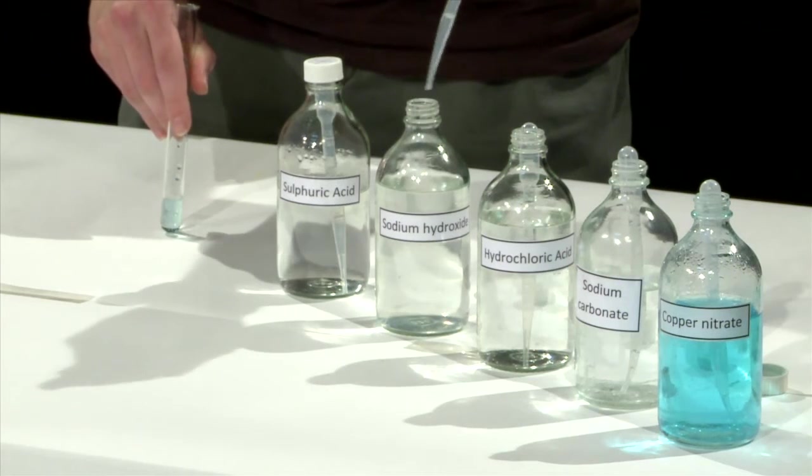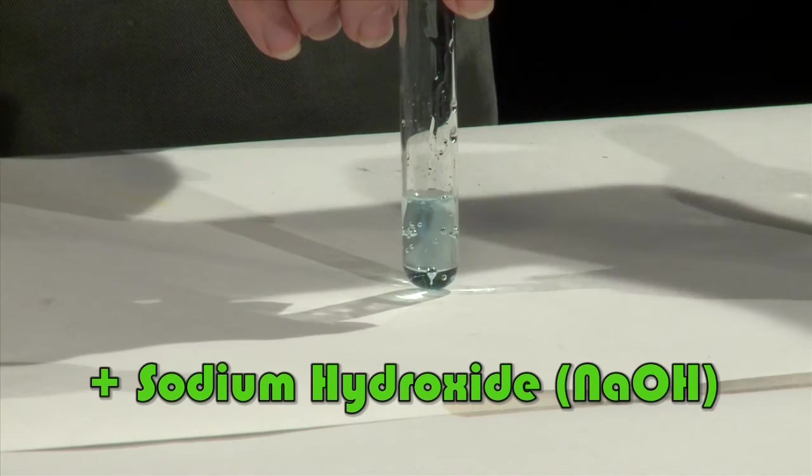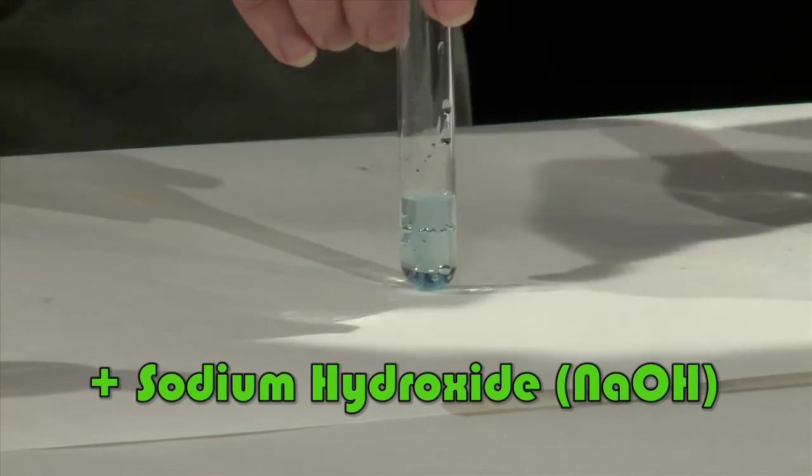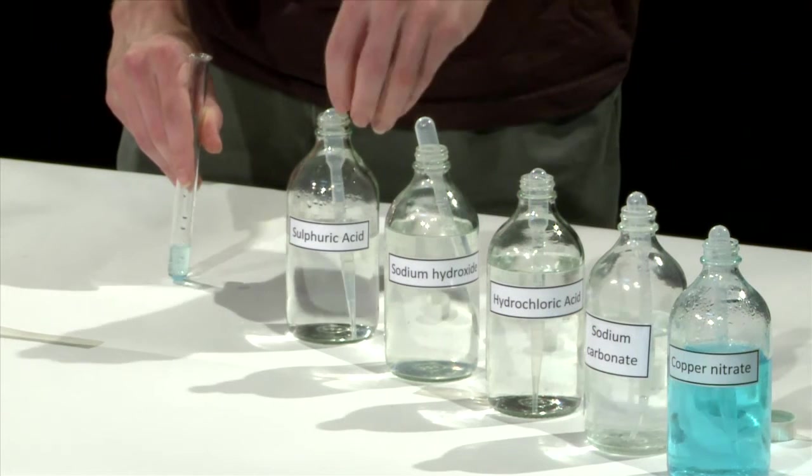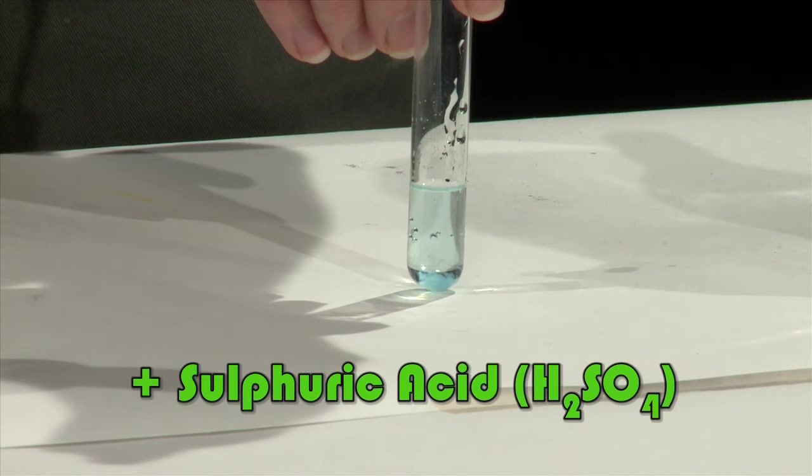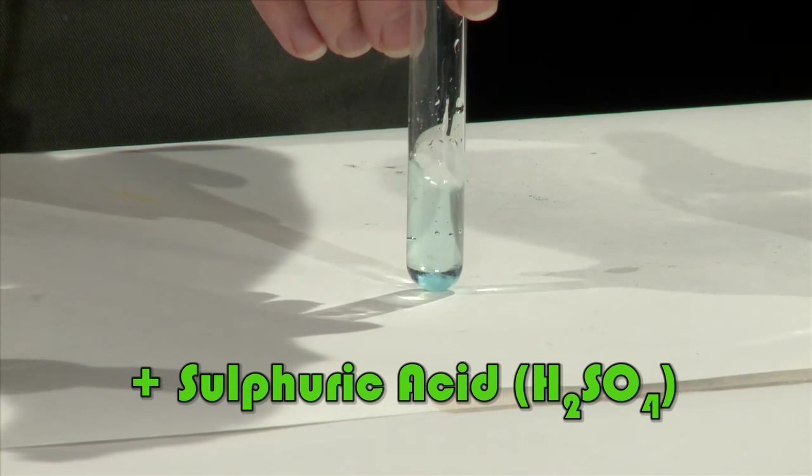Next add 3 drops of sodium hydroxide. This will produce a blue precipitate of copper hydroxide. Then add 15 drops of sulfuric acid. Sulfuric acid will re-dissolve the precipitate, giving you a clear blue solution again.